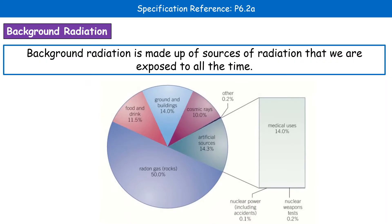What we're going to start off with is understanding what we mean by the term background radiation. These are the sources of radiation that we're exposed to all the time, just in everyday life. You can see the little pie chart there showing the different ways we're exposed to radiation. The overwhelming majority, about 50%, is going to be radon — a gas that comes from rocks, so naturally occurring.